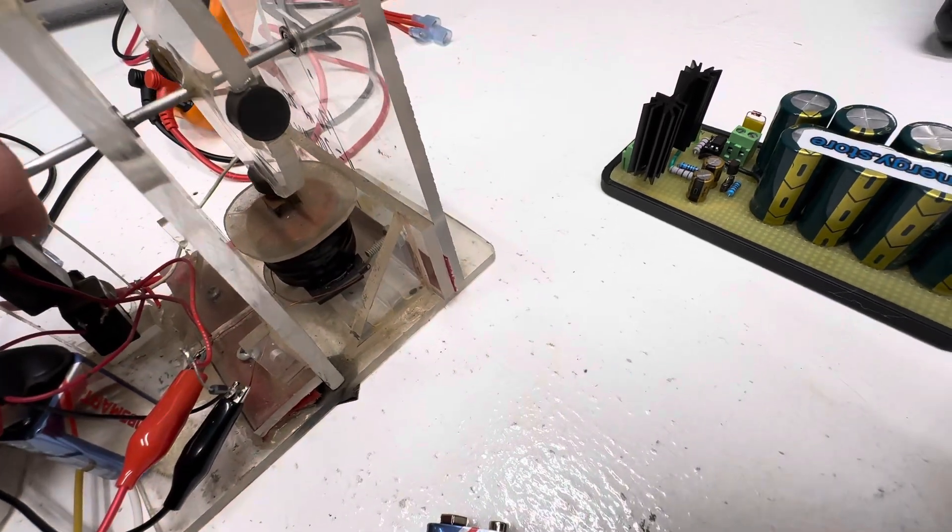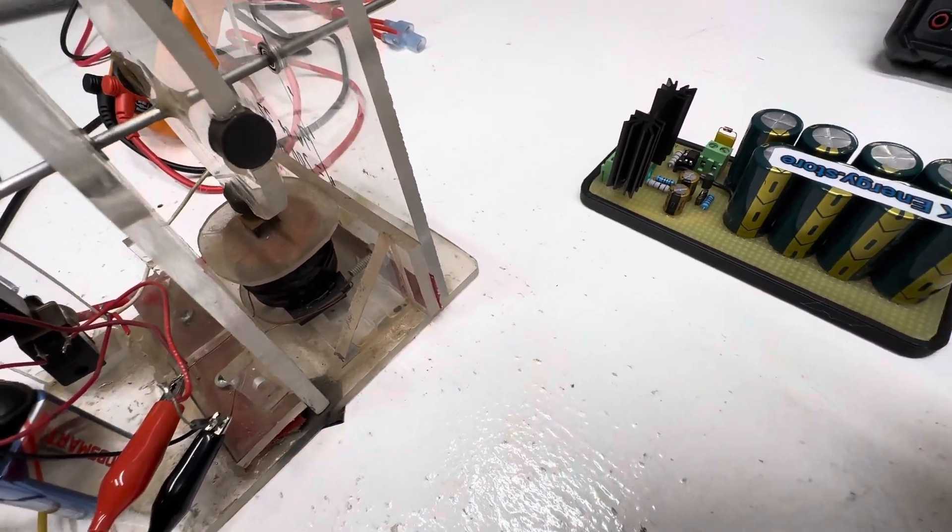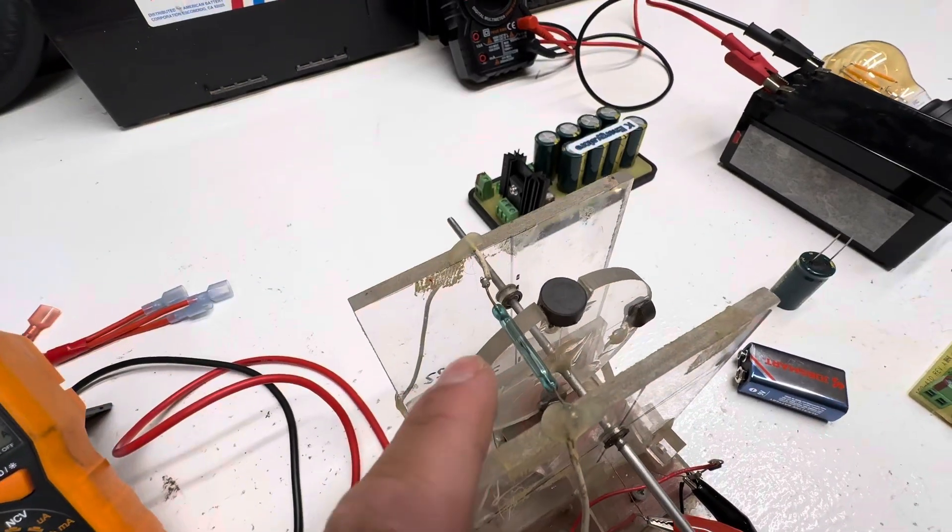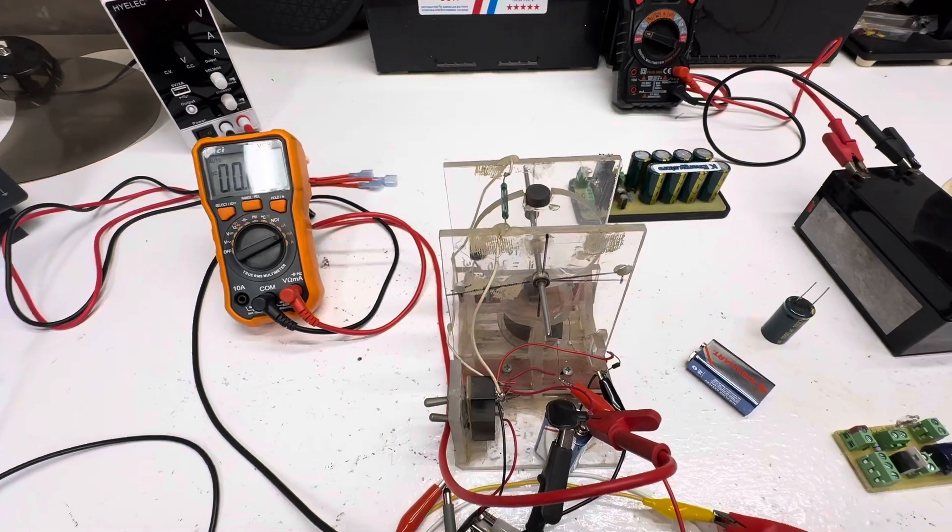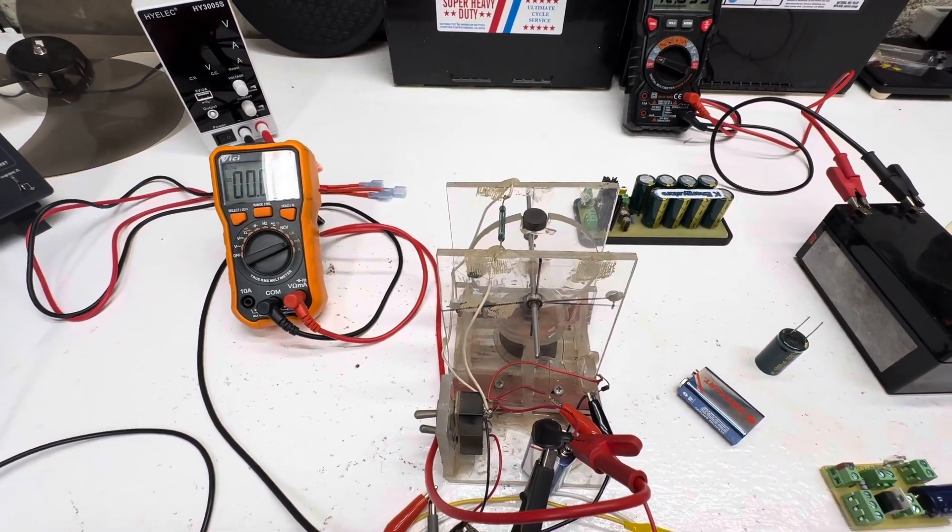There's a little coil down there. I don't remember how many turns, but it was 26 gauge, and then I have a little tiny reed switch right here.